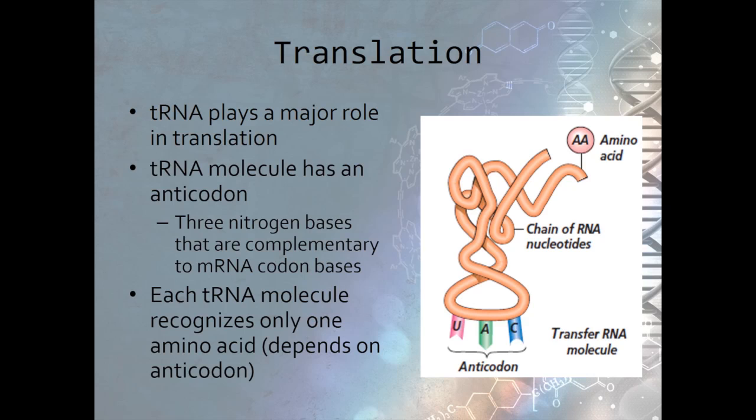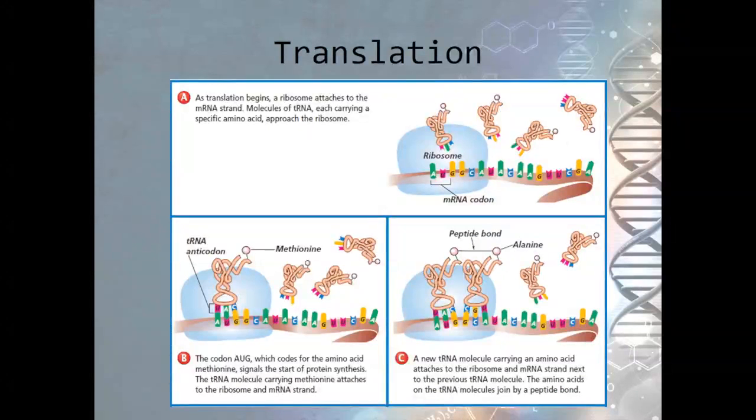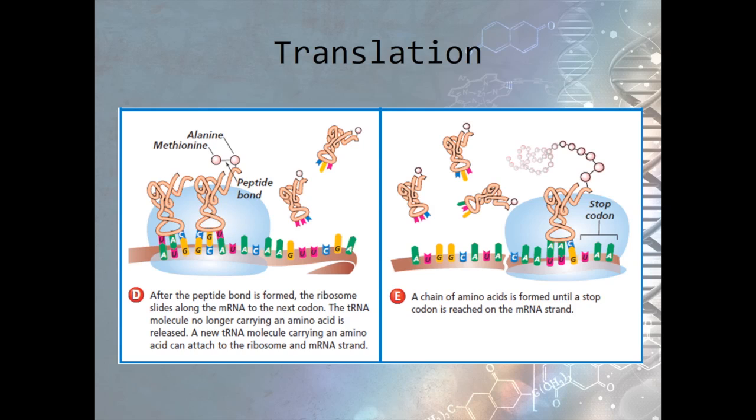Let's take a closer look at each step that takes place during the process of translation. After the ribosome attaches to the mRNA, tRNA molecules begin to approach the ribosome. The first codon on this mRNA strand is AUG, so the tRNA anticodon must be UAC. The codon AUG codes for the amino acid methionine that starts the protein chain. This amino acid is attached to the tRNA molecule with the anticodon UAC. The nitrogen bases of the codon and anticodon bond, and the first tRNA molecule is in place. The tRNA molecule that matches the next mRNA codon attaches to the mRNA strand and joins with the previous tRNA molecule through a peptide bond. Once the peptide bond forms, the ribosome moves along the mRNA strand, and the first tRNA molecule is released because it no longer holds an amino acid.